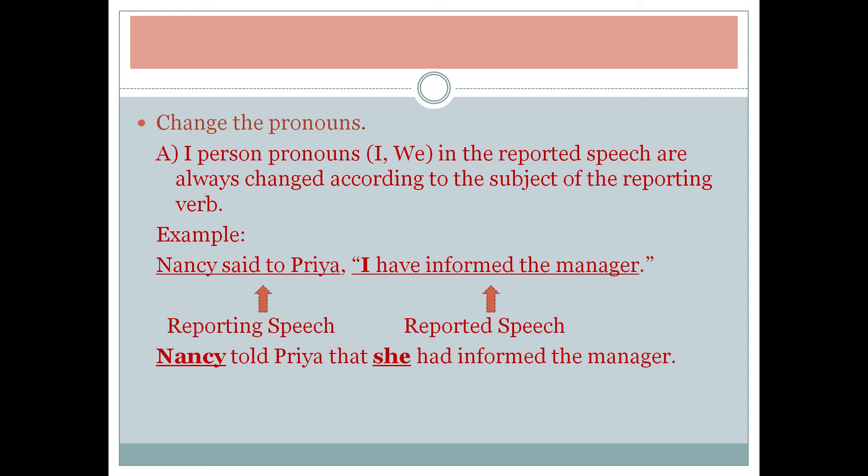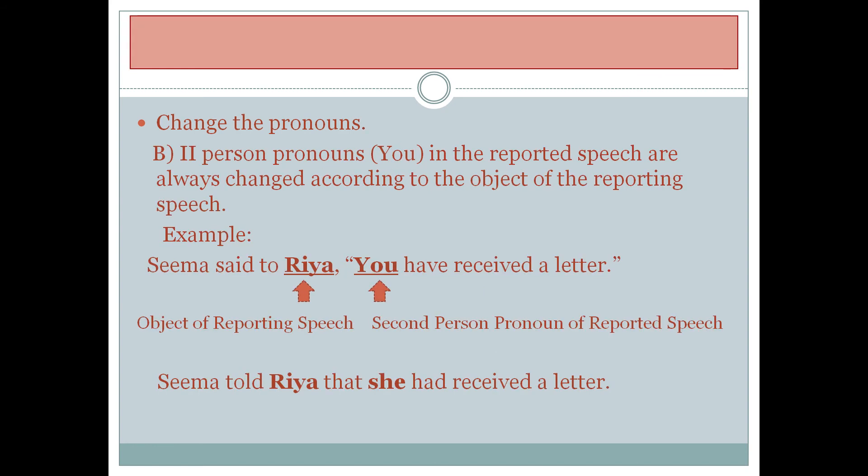For example, 'Nancy said to Priya, I have informed the manager.' Here, 'I' is changed according to the subject of the reporting speech, Nancy — who is third person, female — so 'I' becomes 'she.' The indirect speech becomes: 'Nancy told Priya that she had informed the manager.' Second person pronouns like 'you' are always changed according to the person, number, and gender of the object of the reporting speech. For instance, 'Seema said to Priya, you have received a letter' becomes 'Seema told Priya that she had received a letter.'